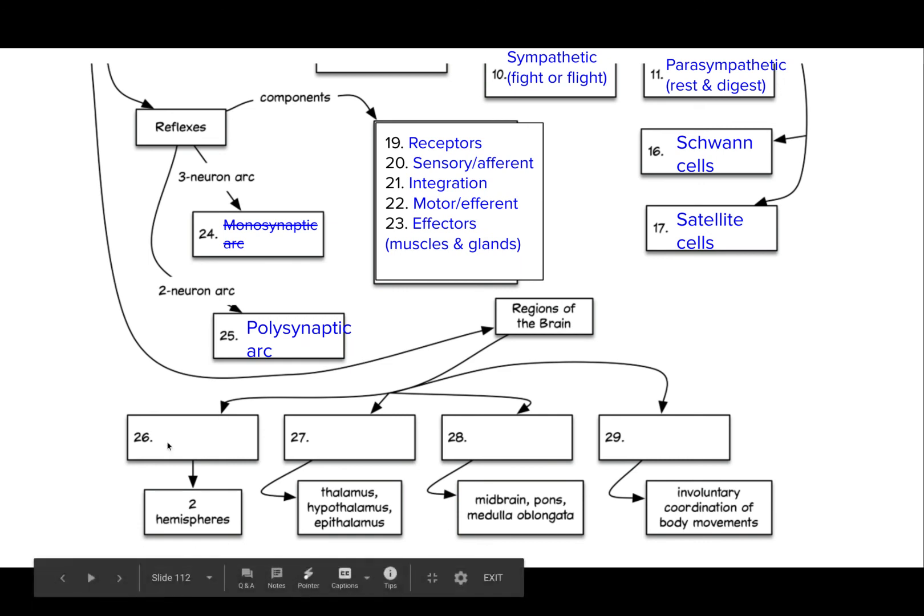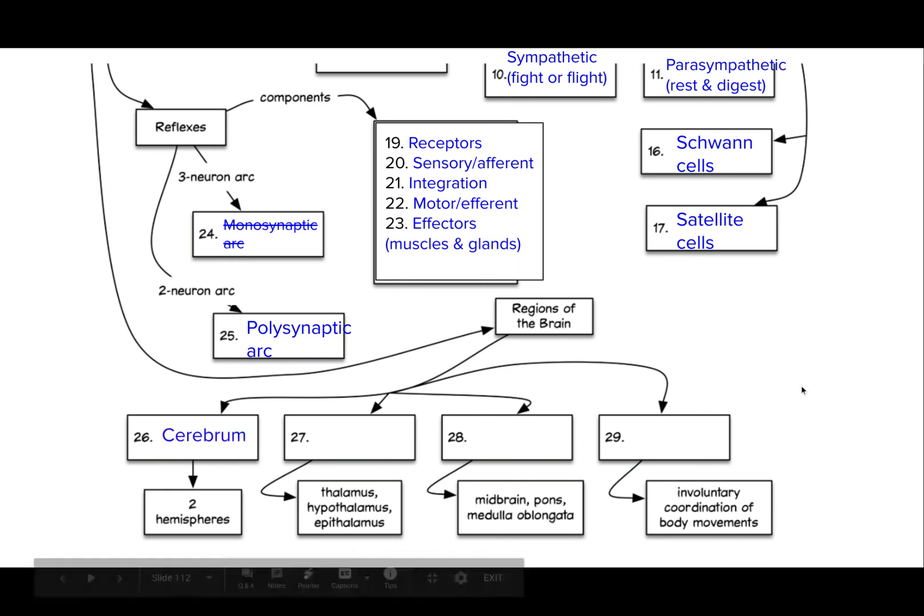Almost done here, guys. Moving through quickly. The regions of the brain, there's quite a bit on the test about the different regions and lobes of the brain. Lots of things you practiced on your homework assignments, but there's four main regions. So the cerebrum is broken up into two hemispheres and they have different lobes, your frontal, parietal, occipital, and temporal. And in those regions, there's different parts that control different aspects of what you can control, where you think, where you understand language, and where you can speak.